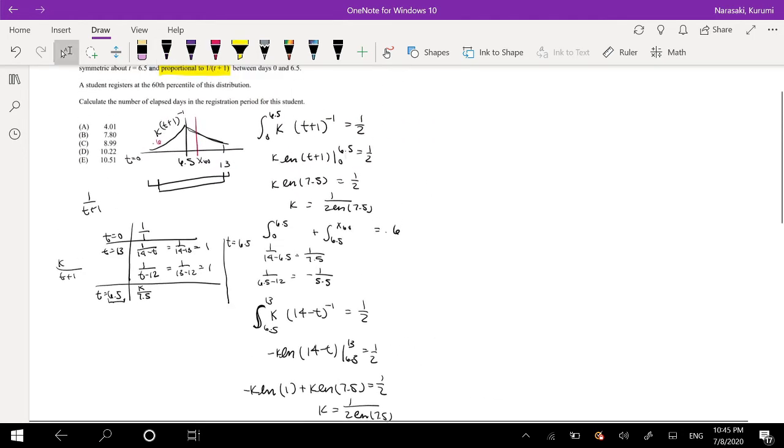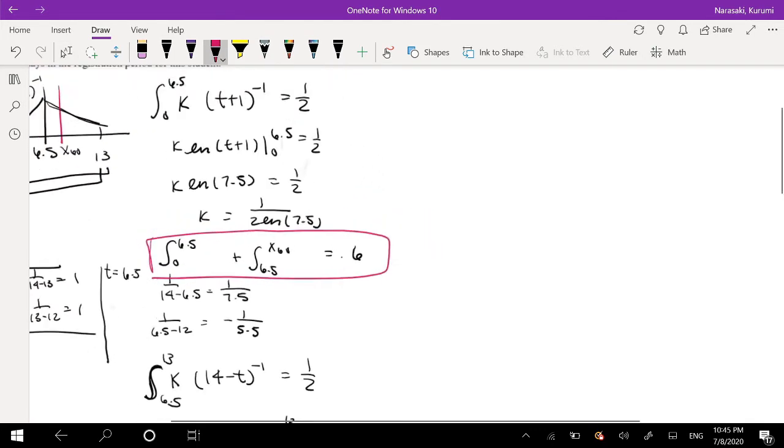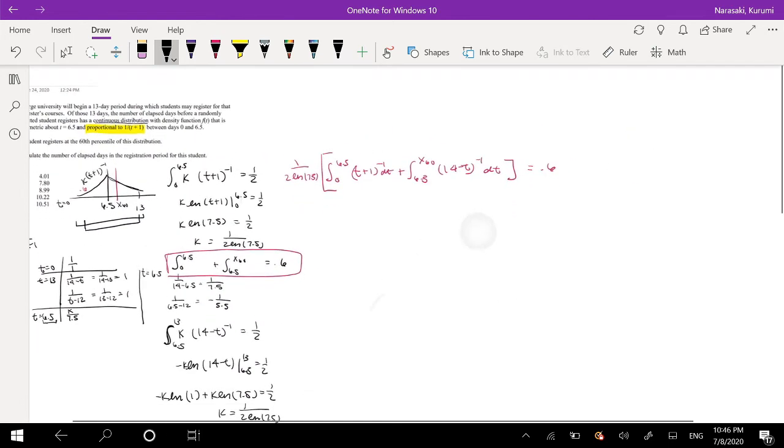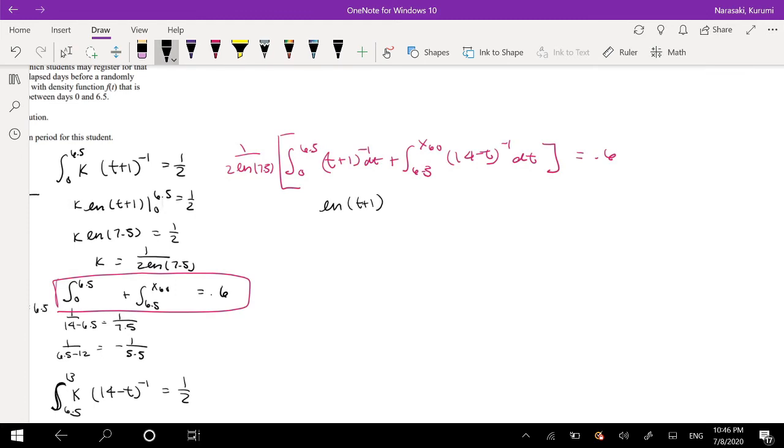Okay. So then we have both sides, so we can just plug it back into our equation that we had initially, this equation right here. So the right-hand side is equal to 0 to 6.5. Our constant is 1 over 2 natural log of, actually I'm going to factor out the constant, 1 over 2 natural log of 7.5, the whole thing times t plus 1 negative 1, plus 6.5 to that 60th value. And this side is just 14 minus t negative 1. This is both integrating in respect to dt. And this whole thing is equal to 0.6. Alrighty. If I integrate this sucker up, now, then this is just equal to natural log of t plus 1, integrating from 0 to 6.5, plus natural log, this is actually minus natural log of 14 minus t, integrating from 6.5 to x60, which is equal to 0.6.